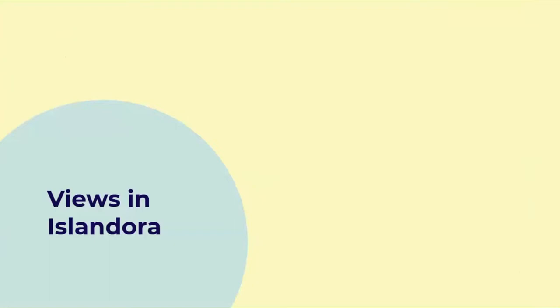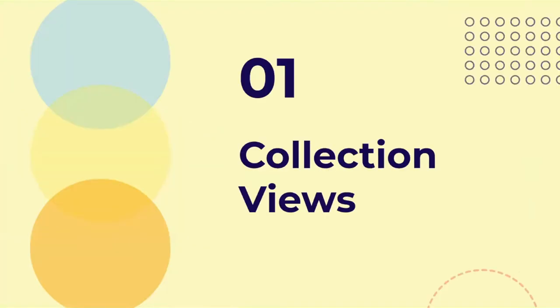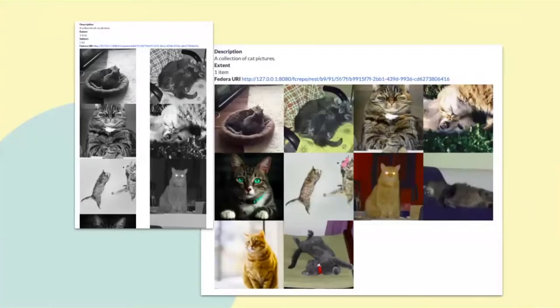We'll dive right in to the views that are already in Islandora when you install it. The first one we'll talk about are the collection views. Every time you make a collection and start adding members to it, members start magically appearing in a block underneath when you go click on the collection. If you go to the sandbox, you can see it's organized with a nice-looking image gallery grid, but we can change that — maybe you want a list of teasers or something else.